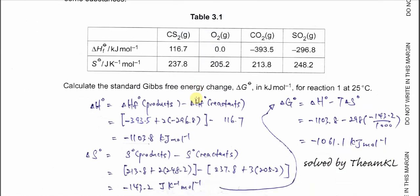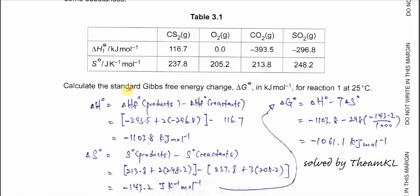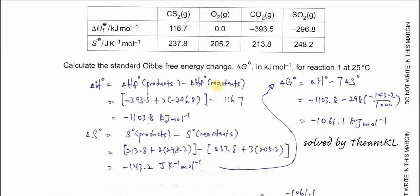Calculate the standard Gibbs free energy in kJ per mole for reaction 1 at 25°C. First, to calculate Gibbs free energy, you need to calculate the enthalpy and entropy. Use ΔG = ΔH - TΔS. To get the enthalpy change of reaction, use formations of products minus formation of reactant.